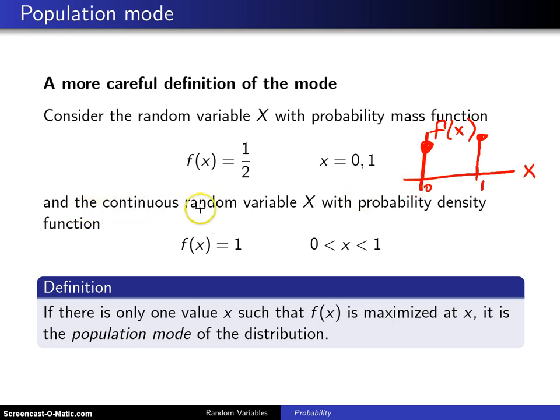Here is a second example, the continuous random variable x with probability density function f of x equals one for x values between zero and one.